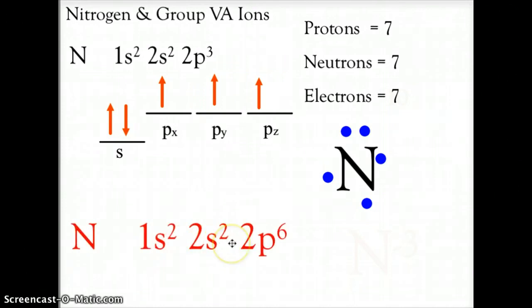Well, nitrogen will take on three, becoming just like neon, stable at 1s² 2s² 2p⁶, following the rule of octet, 8. And now we have an electron count of 10, and 10 electrons versus seven protons gives us a negative 3 charge, and nitrogen typically takes on a negative 3 charge, as will all of the elements in that group 5A ion.